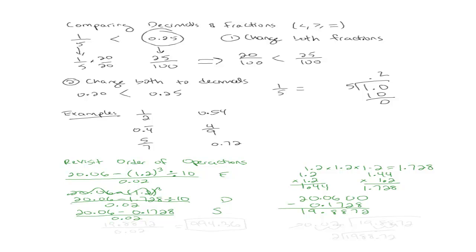Everyone get that? So it's 19.8872. And then after that, the only thing left to do is division. So I'm going to divide 19.8872 by 0.02. Can I do that that way? Or do I need to change anything?